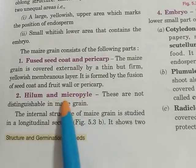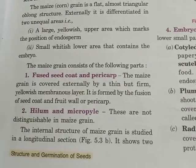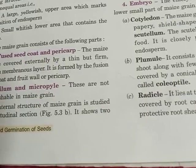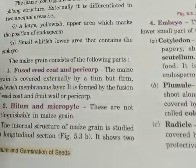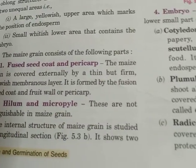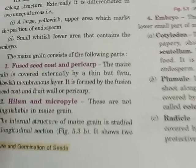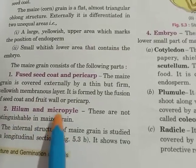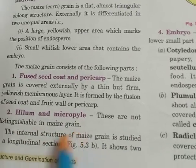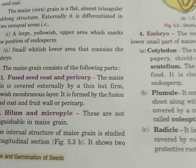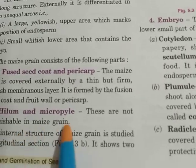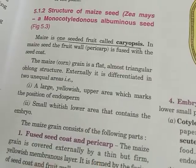Hilum and micropyle: as we saw in the bean seed, the hilum is on the concave side of the seed where it is attached to the pod via the funicle, and the micropyle is a small pore that absorbs water. However, in the maize grain, the hilum and micropyle are not distinguishable — we cannot tell where one is from the other.